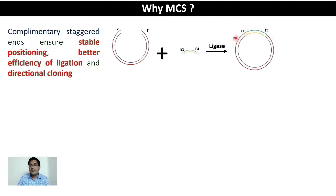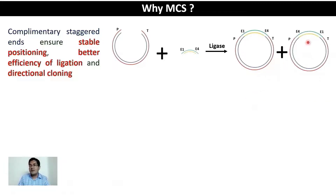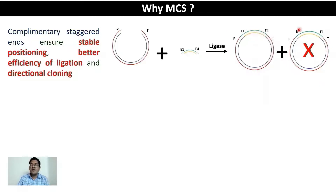There are two possible orientations in which the insert can ligate: one where exon 1 is immediately downstream of the promoter and exon 4 is immediately upstream of the terminator — the correct orientation — and the other where the insert is flipped, placing exon 4 next to the promoter and exon 1 next to the terminator. This incorrect orientation will not produce the desired protein. Therefore there must be a mechanism to ensure ligation happens only in the correct direction — this is directional cloning.